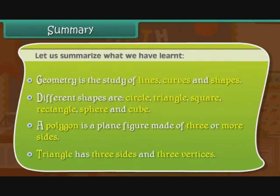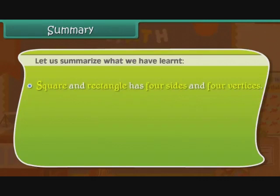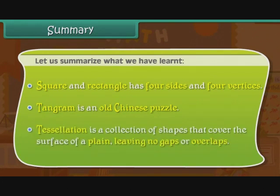Triangle has three sides and three vertices. Square and rectangle have four sides and four vertices. Tangram is an old Chinese puzzle. Tessellation is a collection of shapes that cover the surface of a plane leaving no gaps or overlaps.